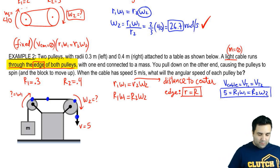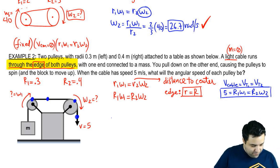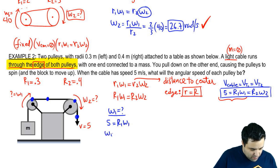And that's what we're going to use to solve this question. So if I want to know what is omega 1, I can look into this part of the equation right here. To solve for omega 1, I'm going to say 5 equals R1 omega 1. So omega 1 is 5 divided by 0.3, and 5 divided by 0.3 is 16.7 radians per second.